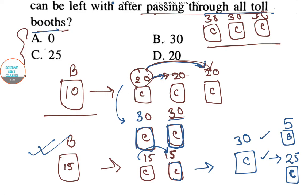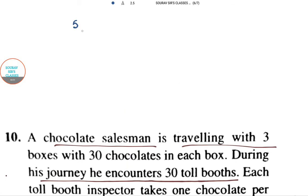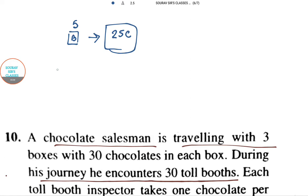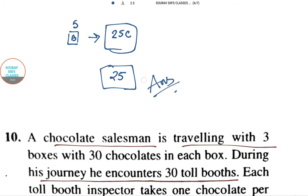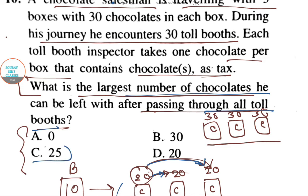So after crossing five booths with one box, he is left with 25 chocolates. That means the largest number of chocolates he can be left with after passing through all the toll booths is 25. Option C is the answer.